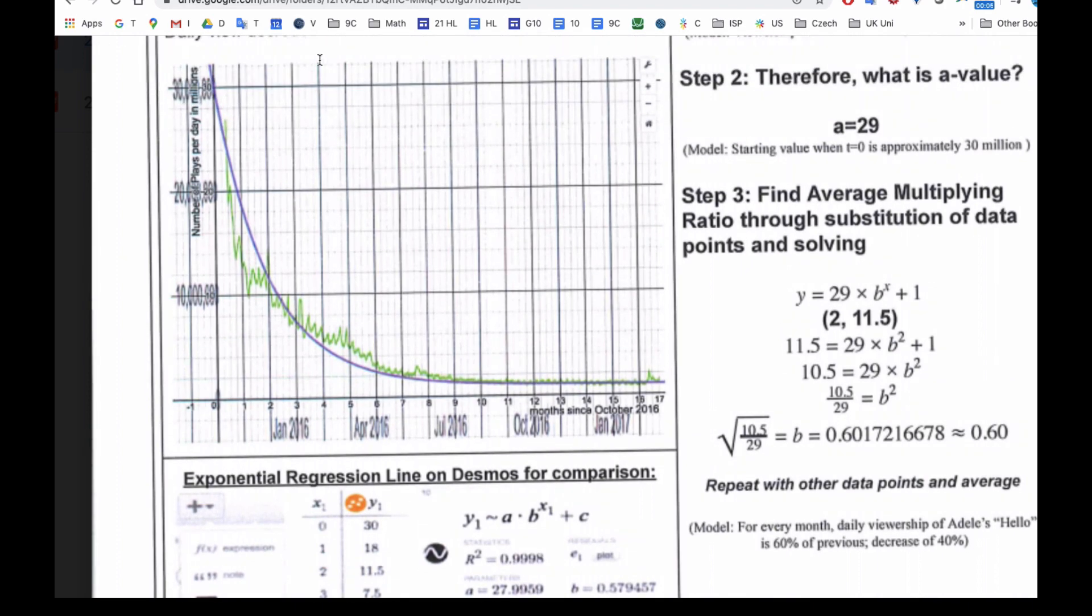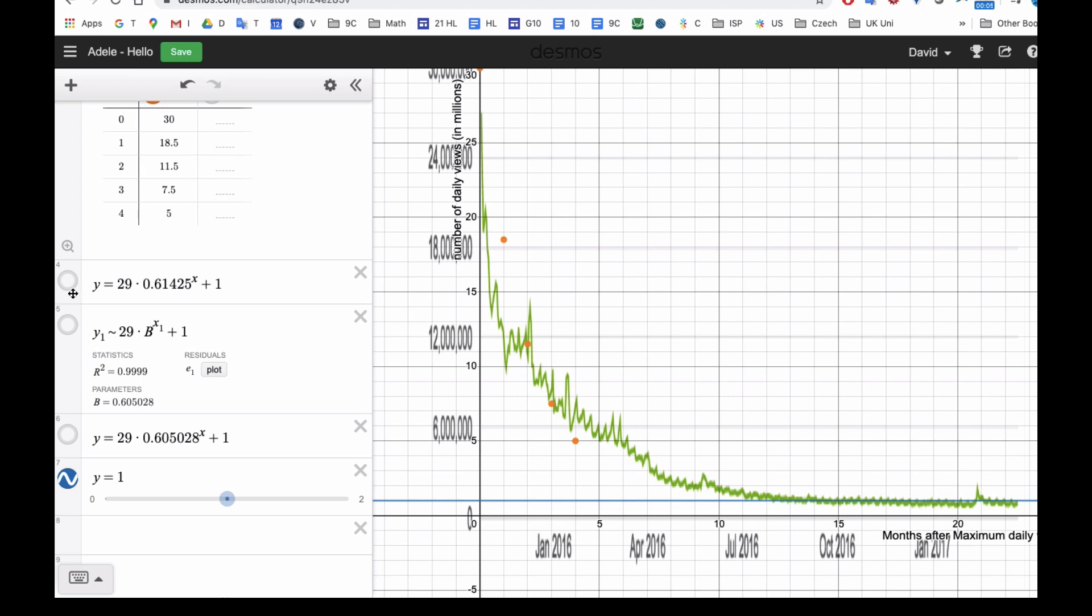But when you go through and you do all these calculations, you get a graph that, look, if I turn it on, you get this graph here. And is it a perfect fit? No. But it is reasonably close to it. And so what we say is that a video that goes viral, like Adele's video did, it usually hits a peak, and then it decreases exponentially overall.